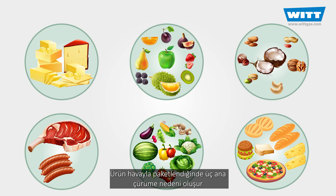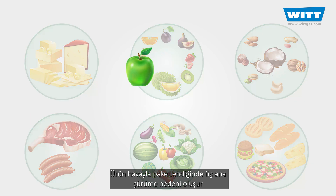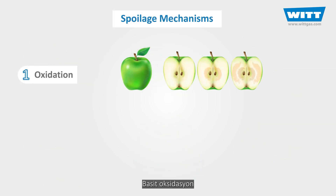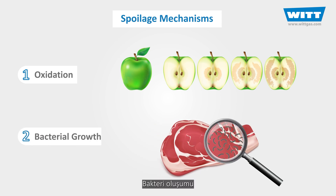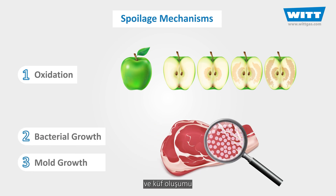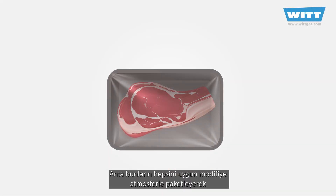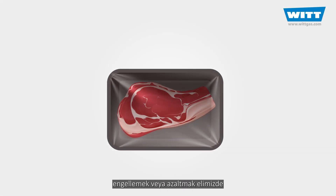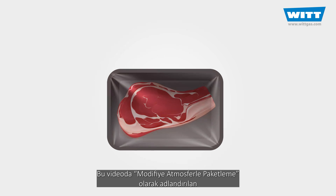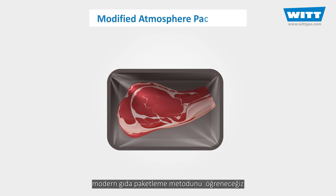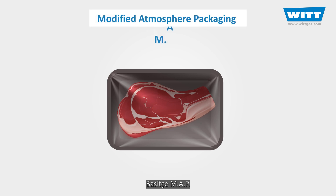When packed in air, food is susceptible to three main spoilage mechanisms: simple oxidation, bacterial growth, and mold growth. However, all of these can be suppressed or reduced by packaging the food in the appropriate modified atmosphere. In this video we're going to learn about a modern method of food packaging called modified atmosphere packaging, or simply MAP.